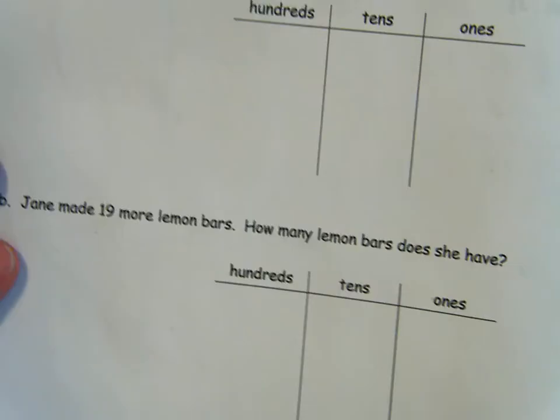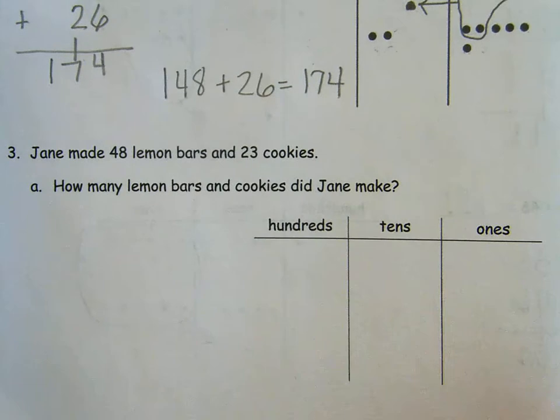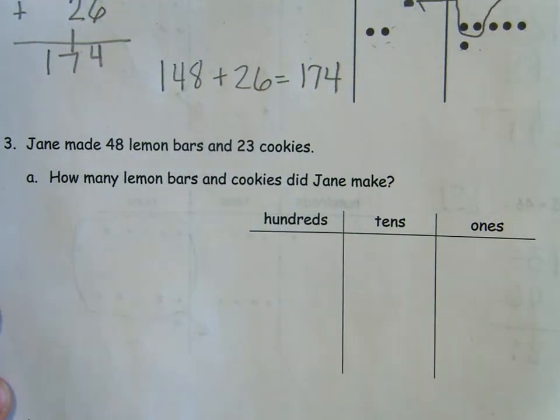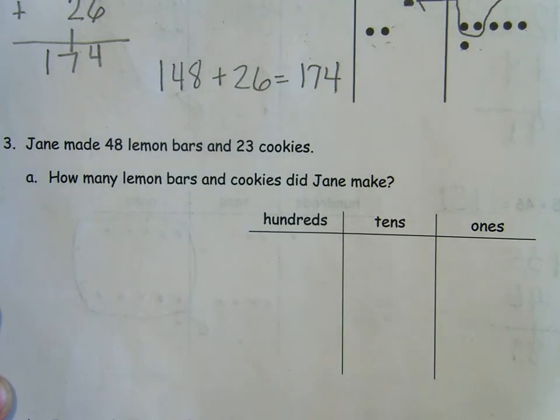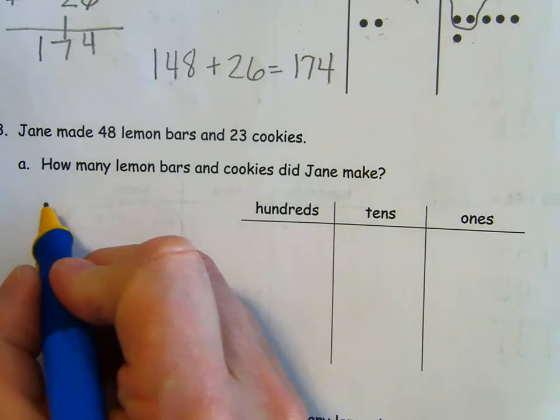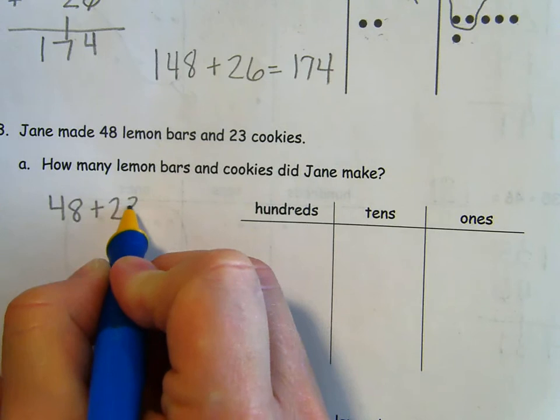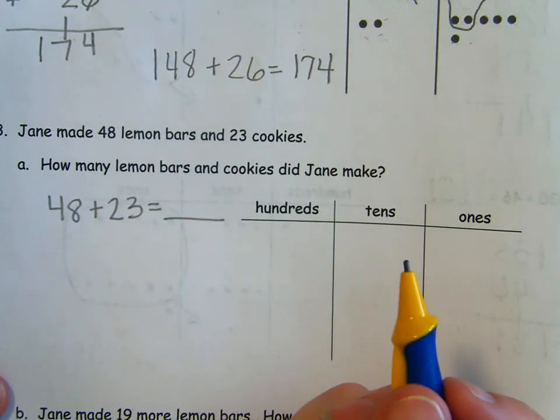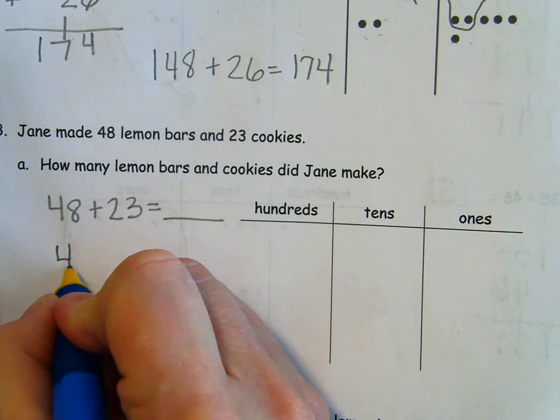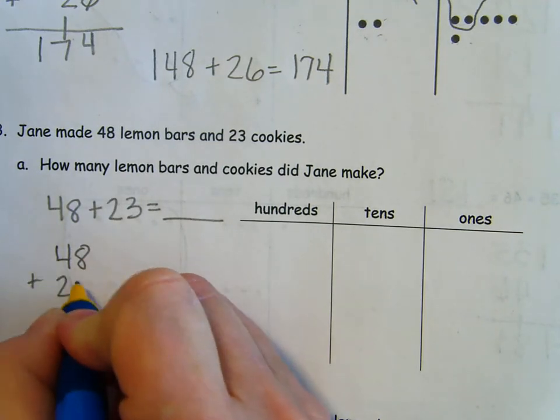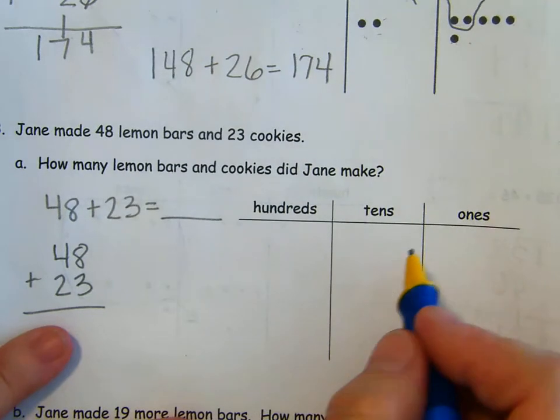Let's take a look at the word problem. It's the same word problem, but it's got two parts. So we'll take it one at a time. Jane made 48 lemon bars and 23 cookies. How many lemon bars and cookies did she make? 48 lemon bars, 23 cookies. How many lemon bars and cookies? That sounds like we need to add those two numbers together. So 48 plus 23 equals something. We've got the two parts. We need the whole. I'm going to turn that into my vertical form. 48, 23.